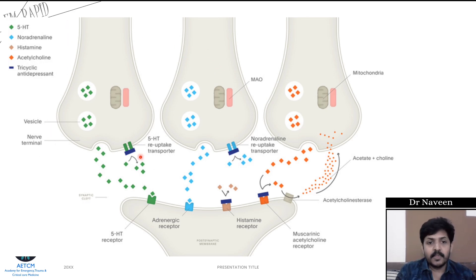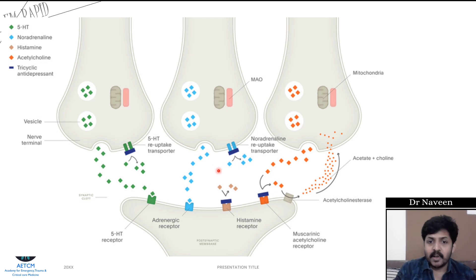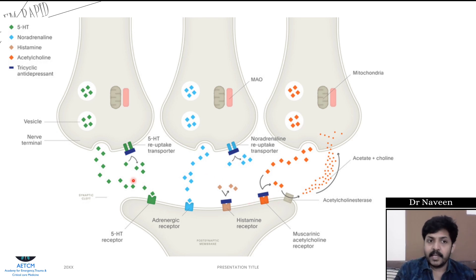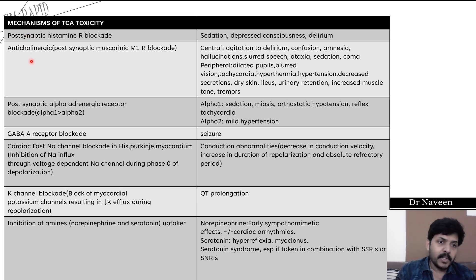Apart from blocking the serotonin reuptake transporter and noradrenaline reuptake transporter, the tricyclic antidepressant also acts on other receptors — the histamine receptor, the muscarinic acetylcholine receptor, and certain other receptors — thereby producing unwanted effects. In total, there are seven mechanisms of tricyclic antidepressant toxicity.